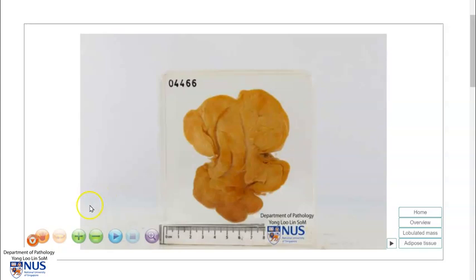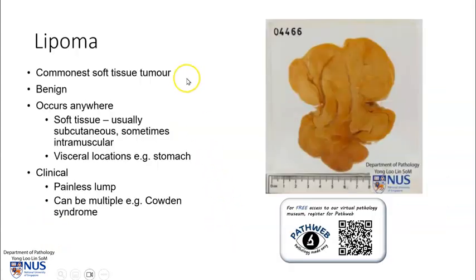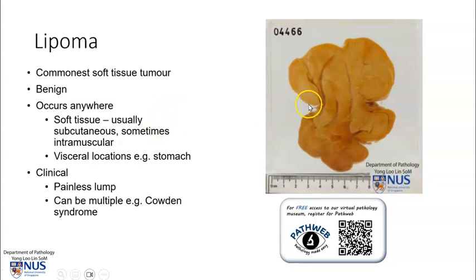Let's learn a bit more about lipoma. Lipomas are the commonest soft tissue tumours in the body, and they are benign. They are composed of adipocytes or fat cells. They can occur anywhere, and usually these tumours arise in the subcutaneous plane, so they are relatively superficial and can be palpated. Sometimes they can be deeper and occur within the muscle, and they can also sometimes occur in visceral locations, for example in the stomach or in the colon. There can be submucosal lipomas.